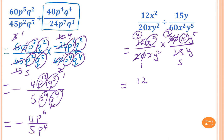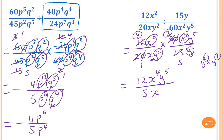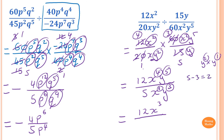For pronumerals: x² times x² = x⁴ on top, and y⁵ on top. On the bottom: 1 times 5 = 5, x¹, and y² times y¹ = y³. Simplify further: x⁴ over x¹ gives x³ on top. For y: y⁵ over y³ gives y² on top. So the final answer is 12x³y² over 5. Thank you so much for watching.